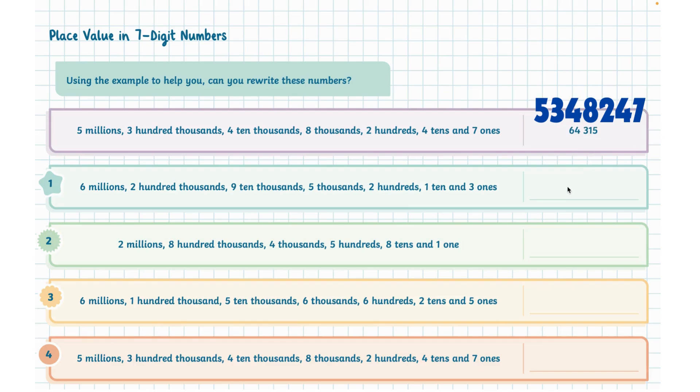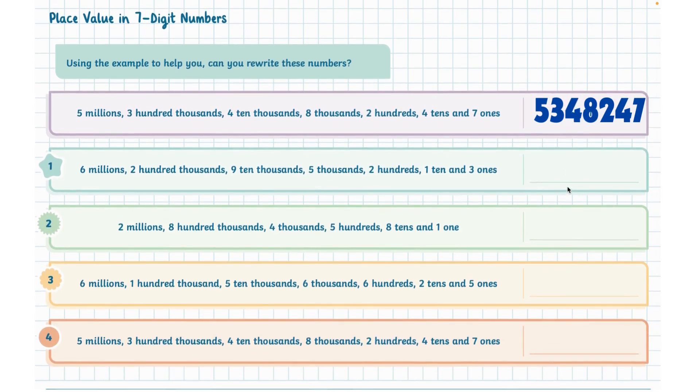Similarly we can do the rest of the examples. So we have like six million two hundred ninety five thousand two hundred and thirteen. So we will write six, two, nine, five, two, one, three, and so on.